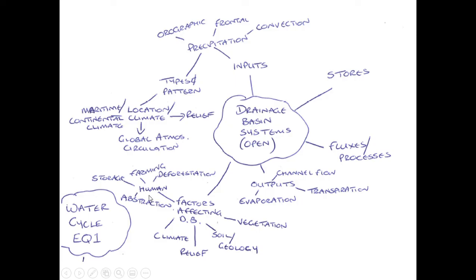We also have the human factors - things like abstraction from the ground, storage in reservoirs, which could affect the drainage basin system. Agriculture and industry will also be taking water from the system. And deforestation can have a major impact. We've already talked about the infiltration and the transpiration rates, but forests and trees and plants are very important to a healthy water system.